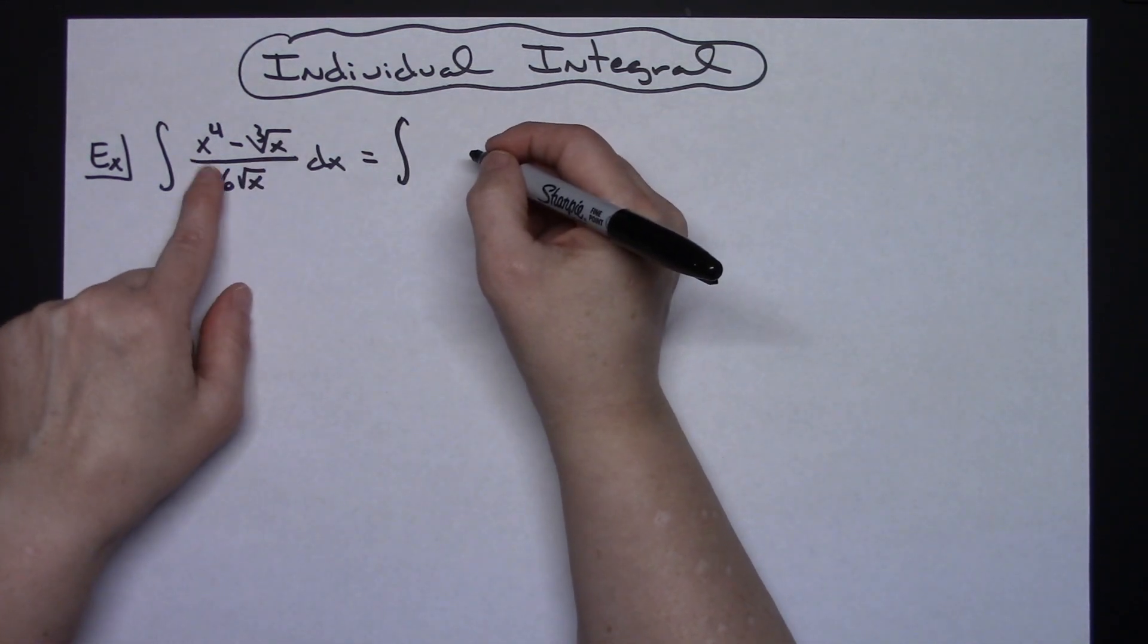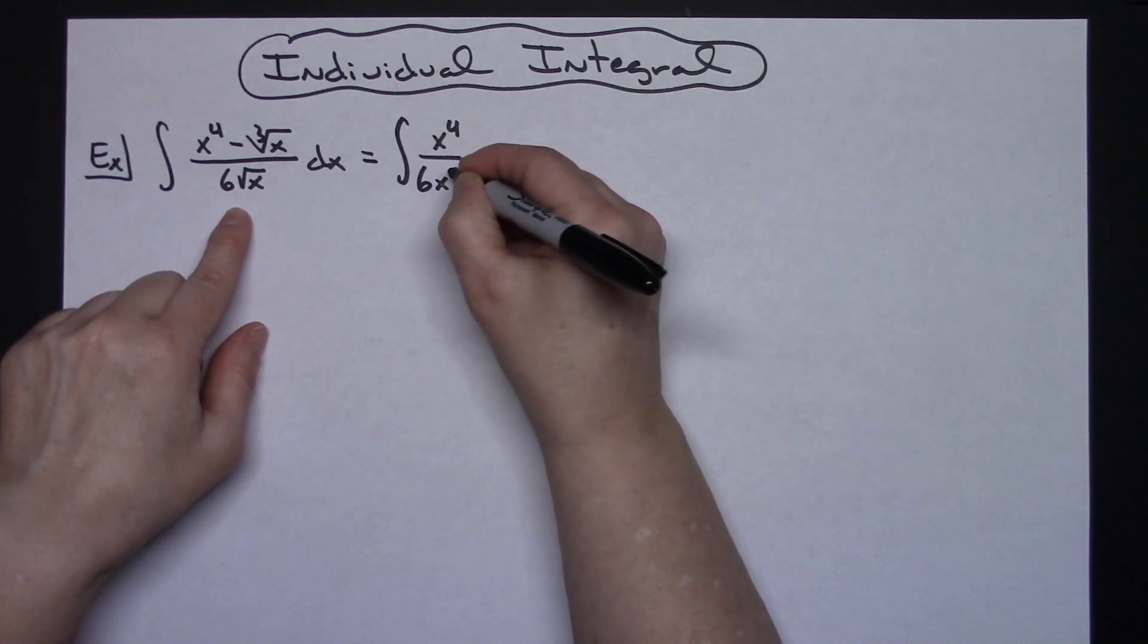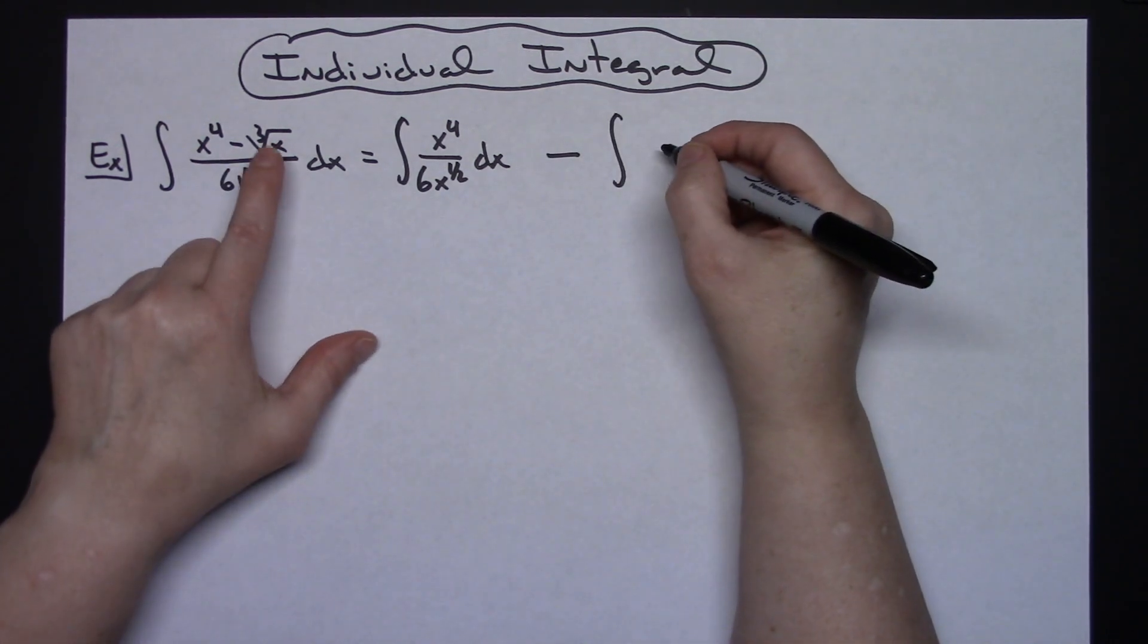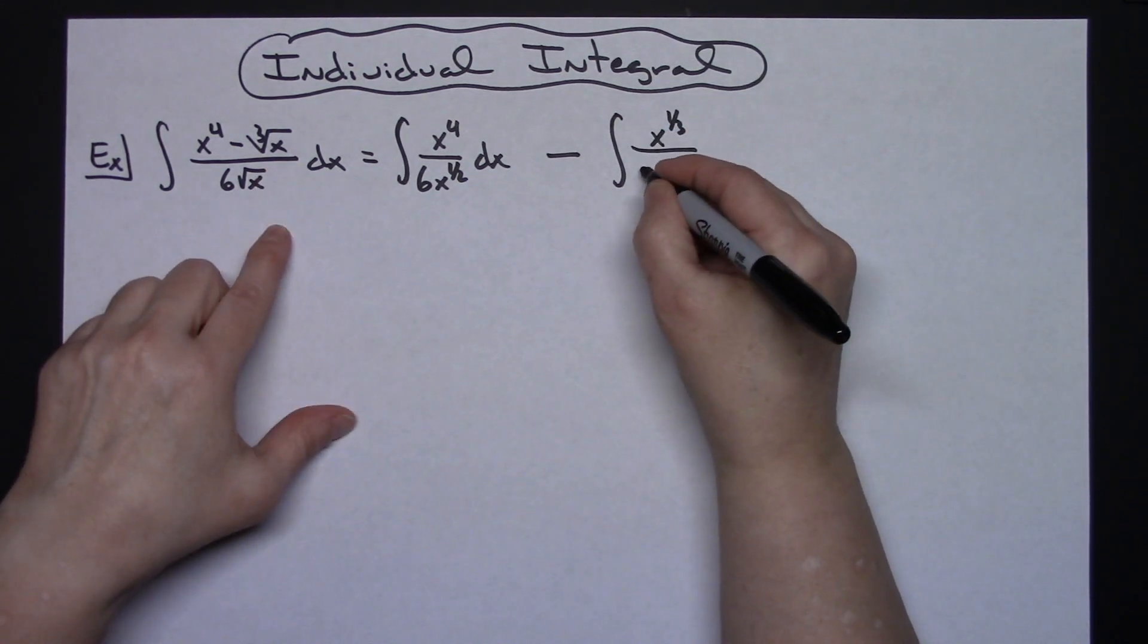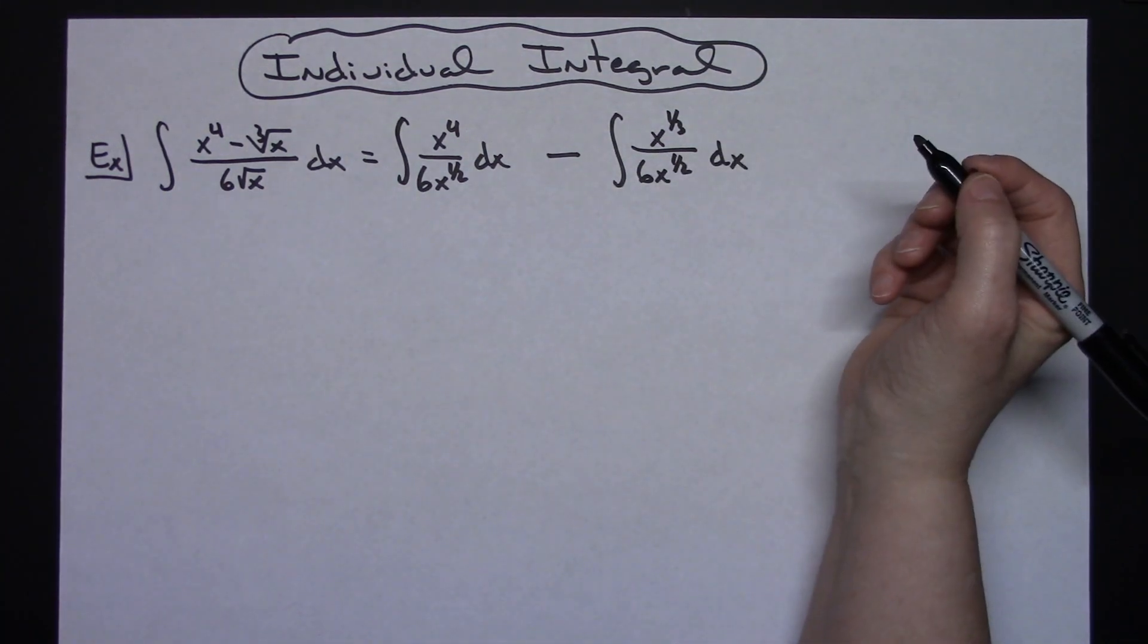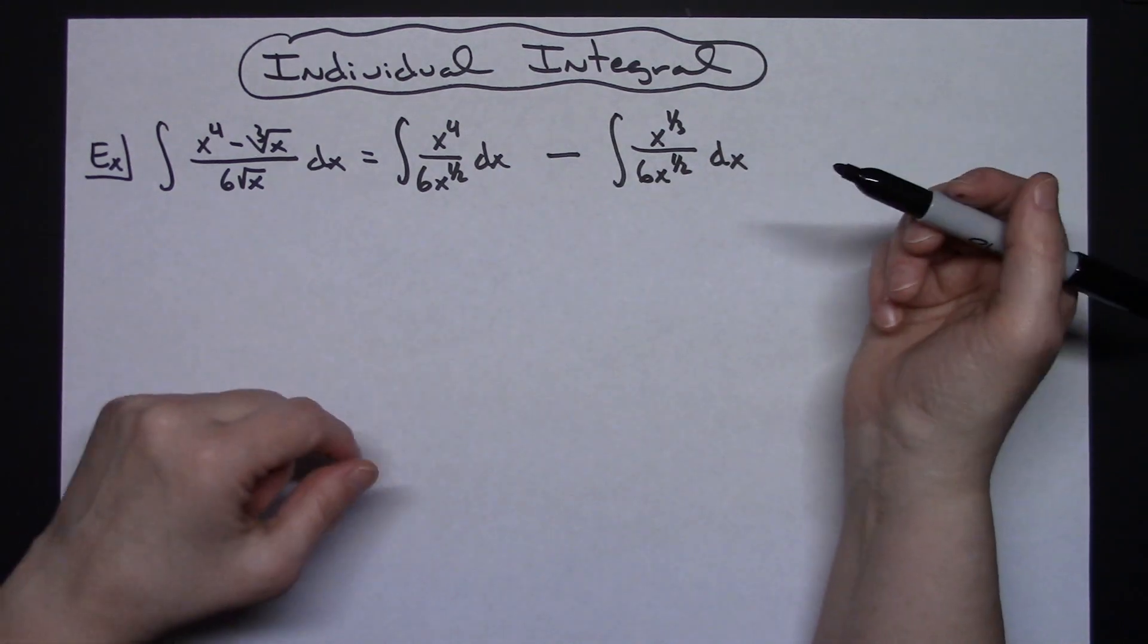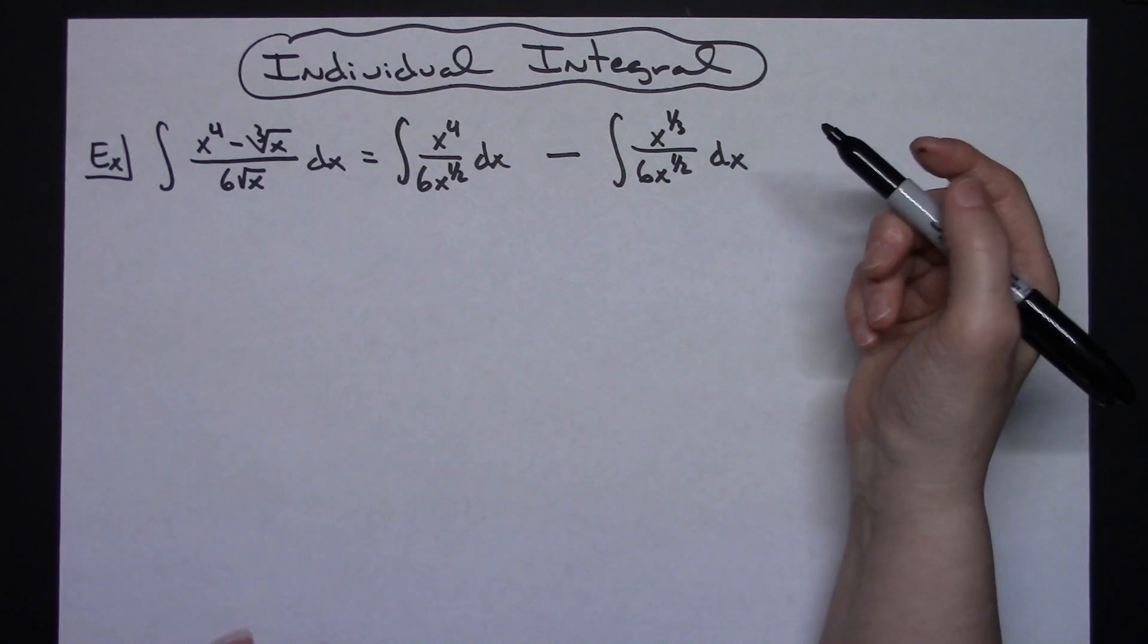The first one will be the integral of x to the fourth over six x to the one-half dx, and then minus the integral of x raised to the one-third all over six x to the one-half dx. The trick here is just seeing this rational function and realizing I'm going to break it up into two and then apply some laws of exponents algebraically to manipulate these and get them down to something nice that we can integrate.